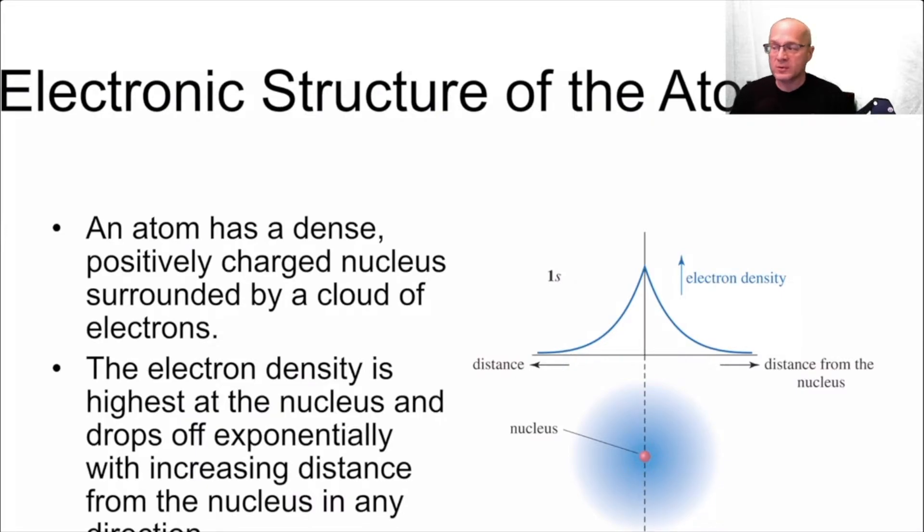Those are called orbitals and shells. Shells are those things that are quantized. You have the first shell, second shell, third shell, fourth shell, and so on. And inside of these shells are orbitals. And orbitals are literally predictions of where electrons should be because you can't actually know where electrons are. So they're predictions of where electrons should be.